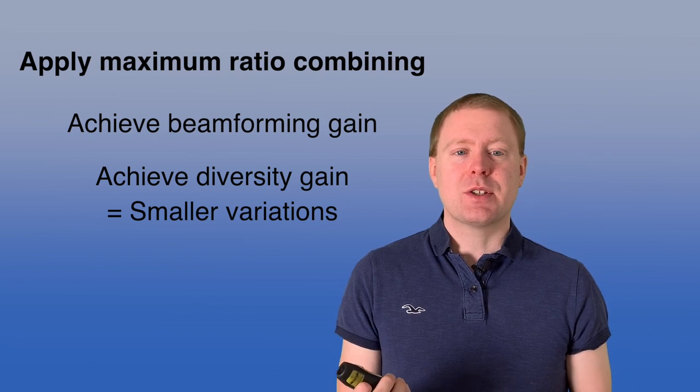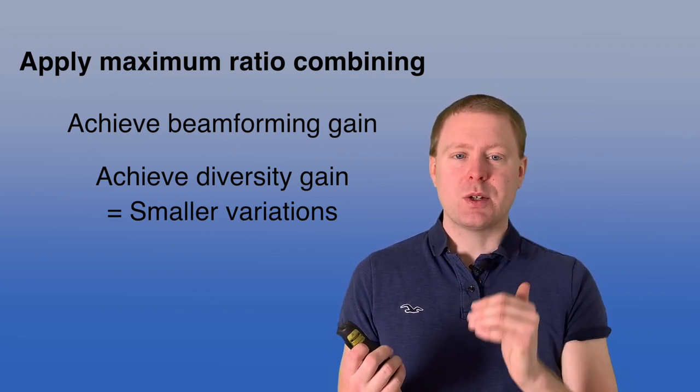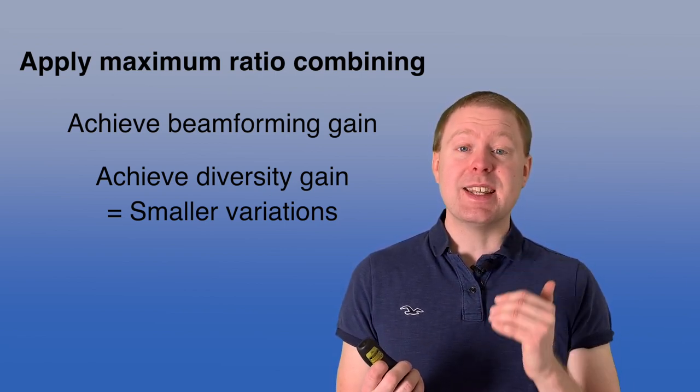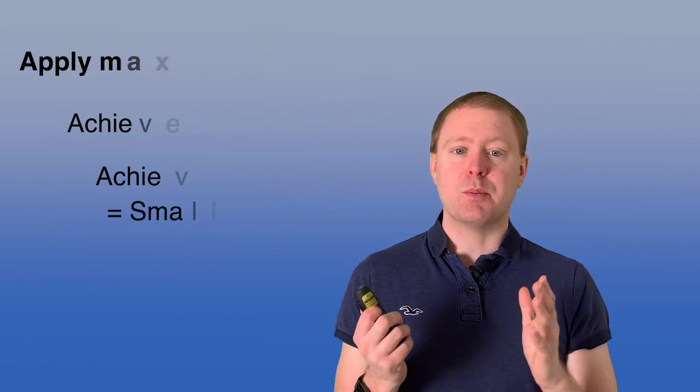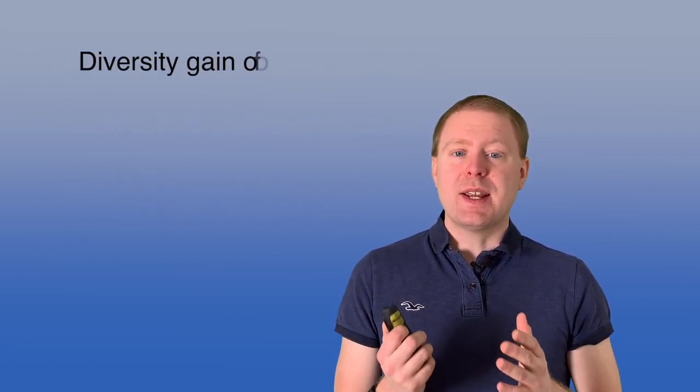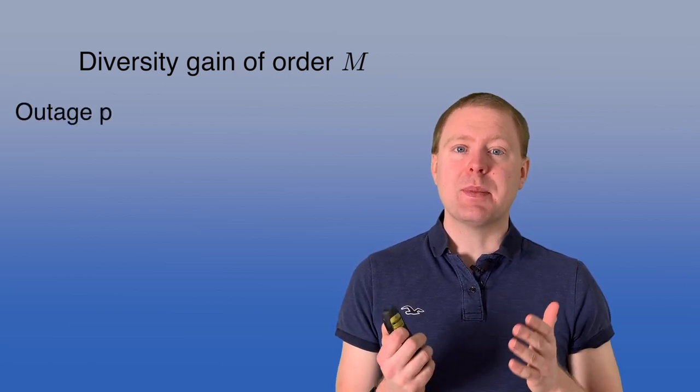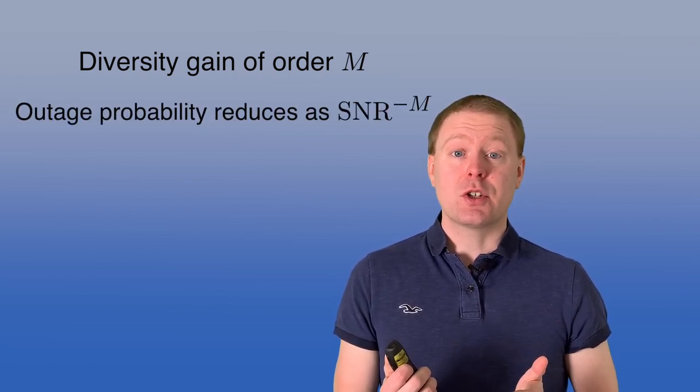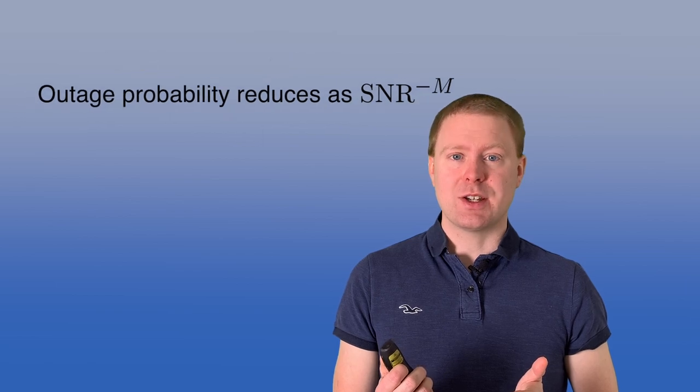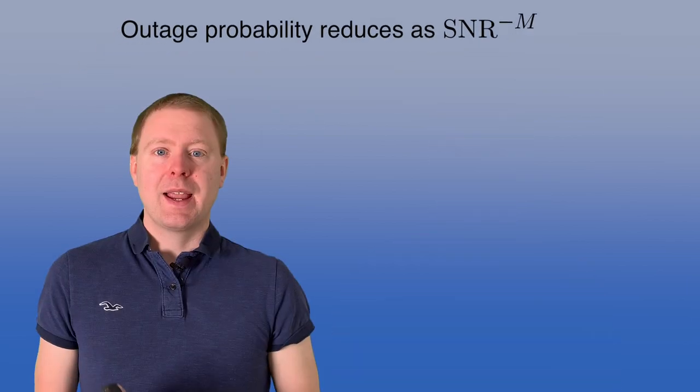And that's essentially because the risk that multiple antennas, all of them, are experiencing deep fade at the same time becomes smaller and smaller. And we say that we get the diversity gain of order m when we have m receive antennas. That means that the probability of outage goes down as 1 over SNR to the power of m.